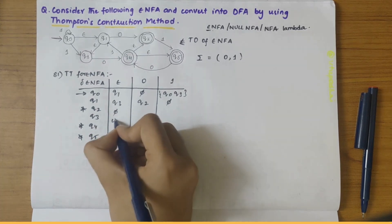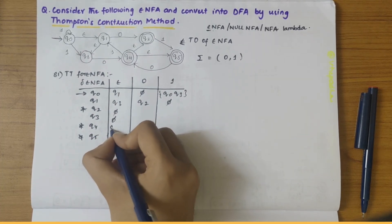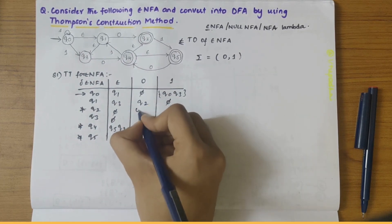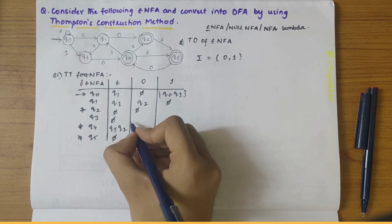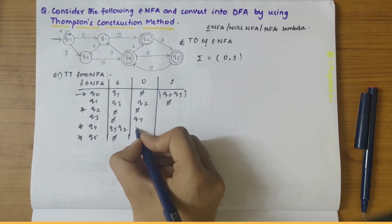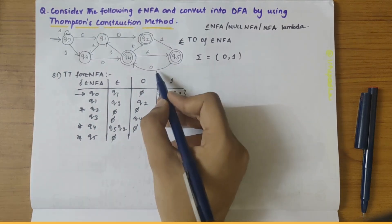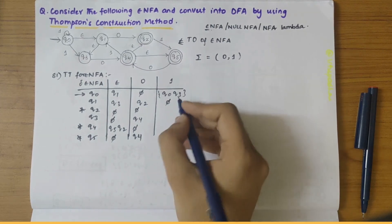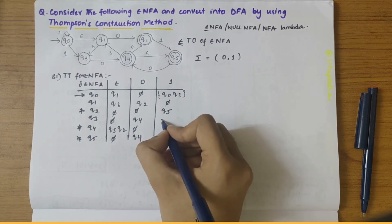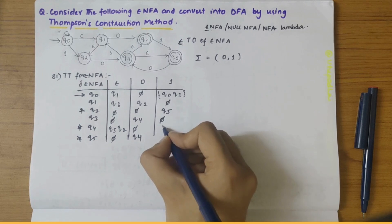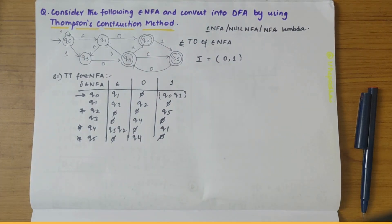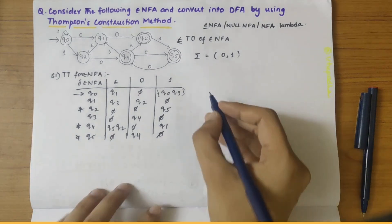Q1 on epsilon gives Q3. Q2 on epsilon gives nothing. Q3 on epsilon gives nothing. Q4 on epsilon gives Q5 and Q2. Q5 on epsilon gives nothing. Q2 on zero gives nothing. Q3 on zero gives Q4. Q4 on zero gives nothing. Q5 on zero gives Q4.